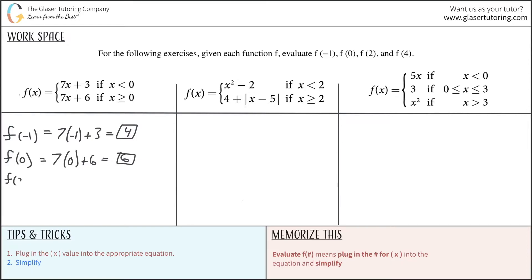Then I'm going to do f of 2. Again, I'm still going to use the second equation because 2 is greater than 0. So this is 7 times 2 plus 6, and that's going to now equal, this is 14 plus 6, so that's 20.